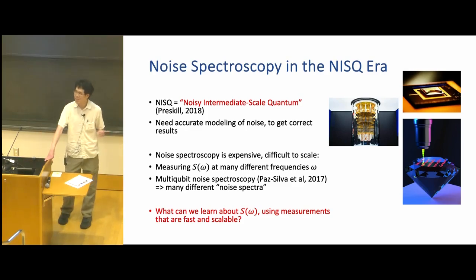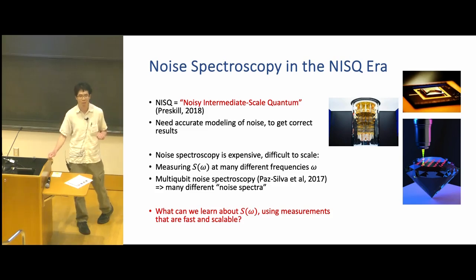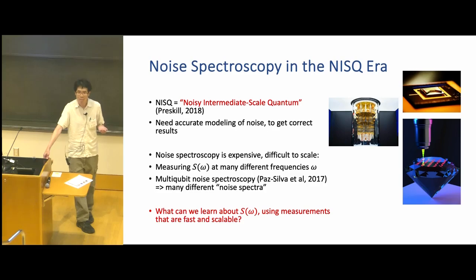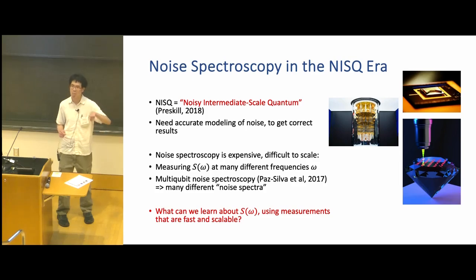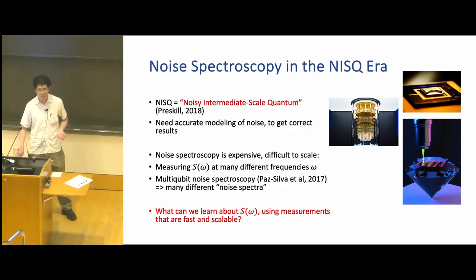Something has to give, as this is somewhat intractable as set up. There are two ways to make progress: first, settle for learning only partial information about the noise spectral density — for instance, just the total noise strength, which is the integral of S(ω). Second, use prior knowledge about the noise — like knowing a spectrum has sharp peaks at unknown frequencies, which enables more efficient spectroscopy. This is what we were actually able to do.